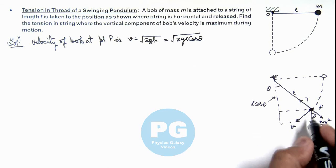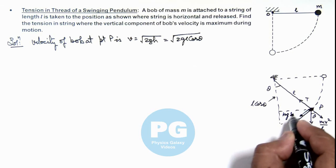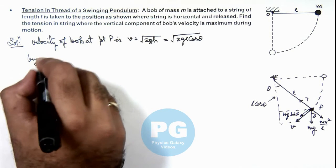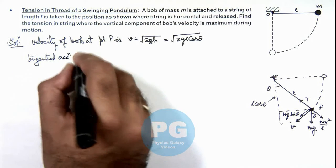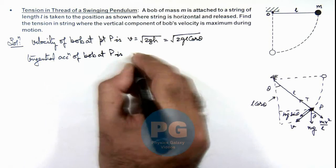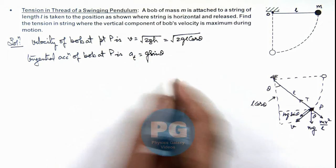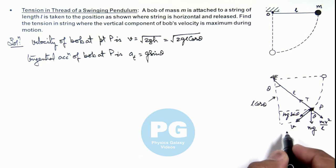Now at point P it is having tangential acceleration due to mg sin θ. The force acting on it is mg sin θ along the tangential direction. So we can write the tangential acceleration of bob at P as ay tangential = g sin θ, as we already studied in concept videos. This is only due to the tangential force on it.